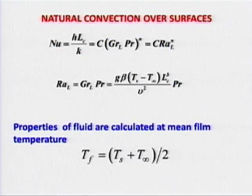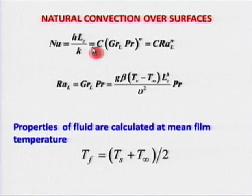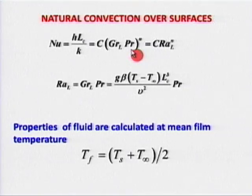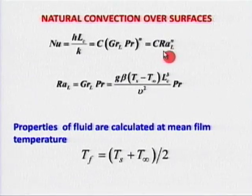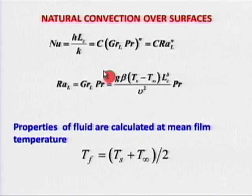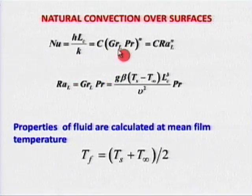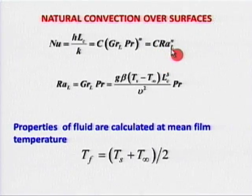If Gr/Re² vanishes, the equation reduces exactly to the forced convection equation — a beautiful way of reducing natural convection to forced convection. Nusselt number is a function of Grashof and Prandtl numbers, or equivalently Rayleigh number, because the momentum equation contains Grashof and the energy equation contains Prandtl. Nusselt number is typically of the form: Nu = C × Ra_L^n.